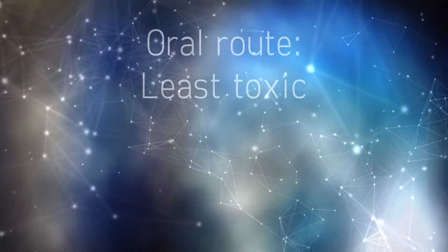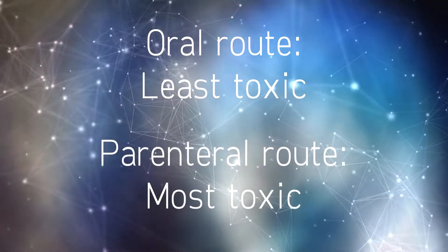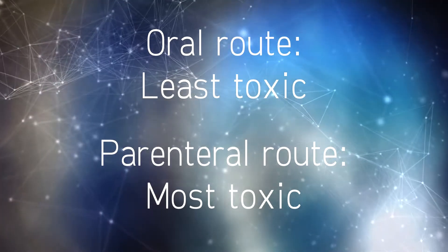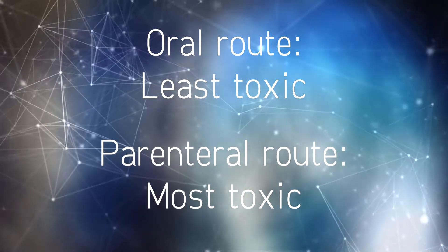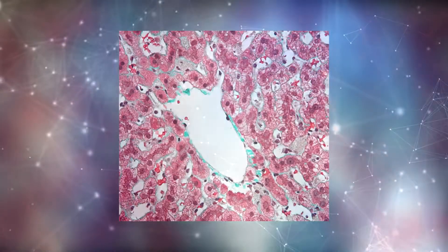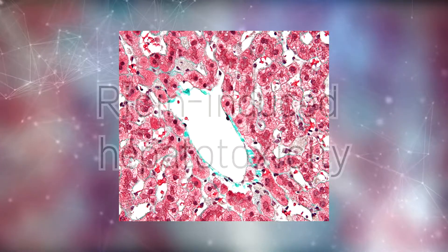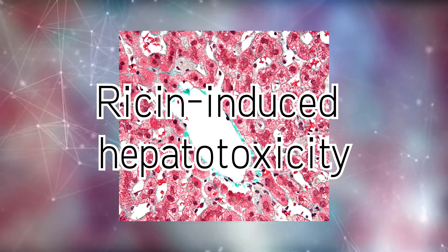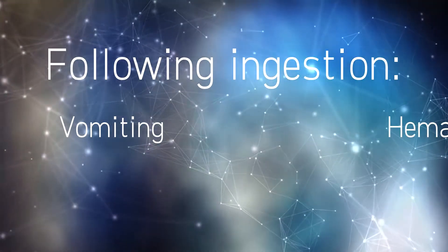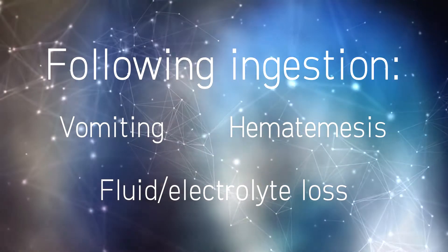As with Abrin, oral administration is much less lethal than parenteral administration, and clinical manifestations include the well-known vascular leak syndrome. Following vascular damage, hepatocytes and nephrons exhibit secondary damage, with Kupffer cells, or specialized liver macrophages, being the primary targets in ricin-induced hepatotoxicity. In the case of ingestion, vomiting, hematemesis, and conditions associated with fluid and electrolyte loss occur.